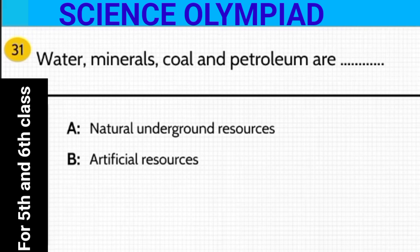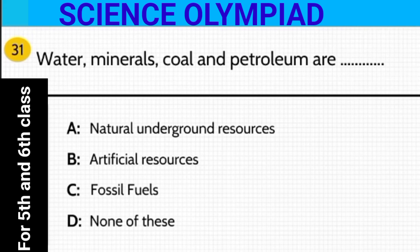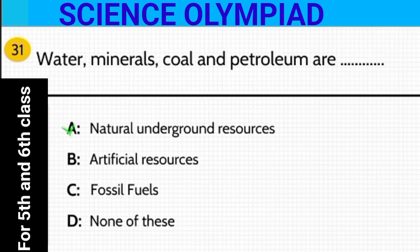Minerals, coal, and petroleum are — natural underground resources, artificial resources, fossil fuels, or none of these? The answer is option A — these are natural underground resources.